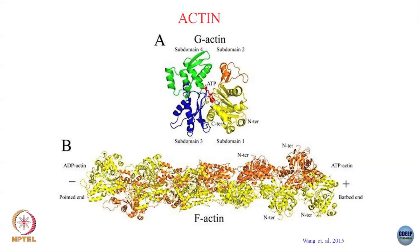G-actin is the monomeric form; F-actin is the filamentous form. The filamentous form consists of two filaments wrapping and coiling around each other in a helical form to give what is called this actin polymer, or actin filament.